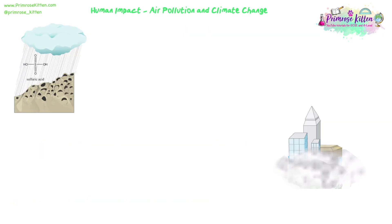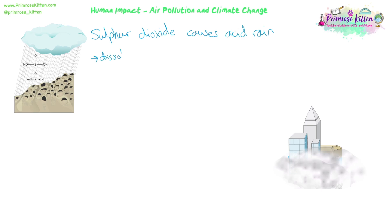Let's look at the impact of some elements present in different types of air pollution. Sulfur dioxide comes from the burning of fossil fuels, and its main issue is that it causes acid rain. The sulfur dioxide dissolves in water in the clouds as it rises up from roads and streets, creating sulfuric acid.